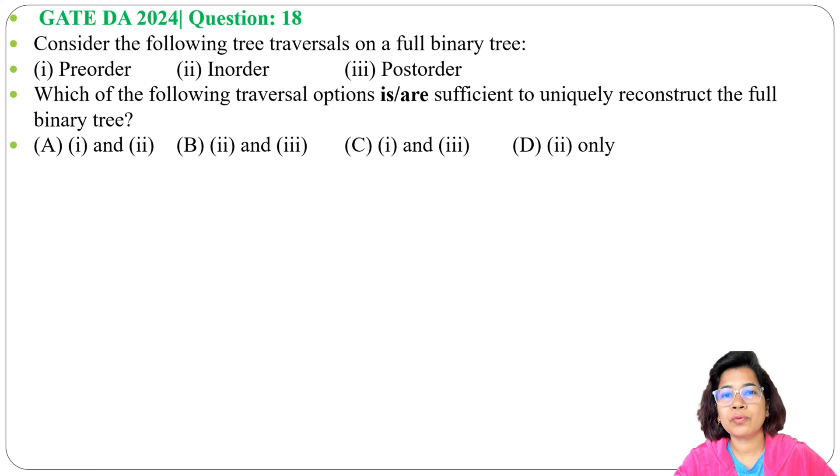To reconstruct the full binary tree, we need at least two traversals. Pre-order and in-order is okay, in-order and post-order is okay, pre-order and post-order is okay. From just one traversal we cannot construct the tree. We need at least two traversals. Any two combination is fine.